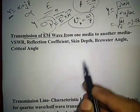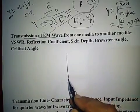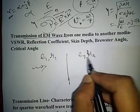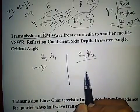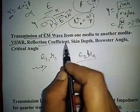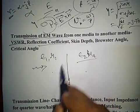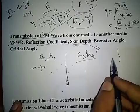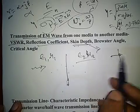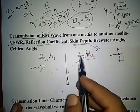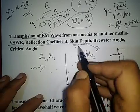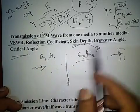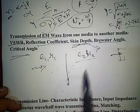For transmission of EM waves from one medium (epsilon1, mu1) to another (epsilon2, mu2), boundary conditions apply. VSWR (voltage standing wave ratio) and reflection coefficient at the media interface can be asked. Skin depth — how far an EM wave penetrates a conducting medium — is very important. Brewster angle and critical angle are also important topics related to EM wave transmission between media.